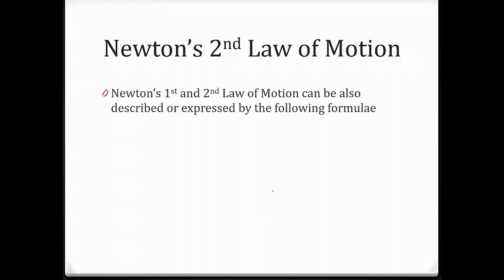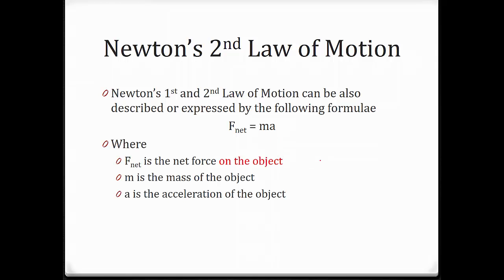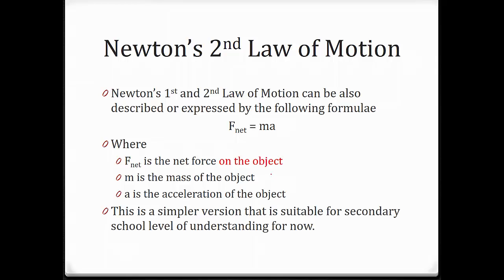Newton's first and second laws can also be described by the following formula: F_net equals M times A, where F_net is the net force on the object, M is the mass of the object, and A is the acceleration of the object. This is the simpler version suitable for secondary school level understanding.